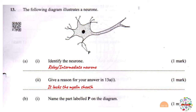Part B Roman 1: name the part labeled P on the diagram. These are the dendrites — note the plural because P is pointing at two of them. Part B Roman 2: state the function of the dendrites. Dendrites are used for transmission of nerve impulses from one neuron onto the other.